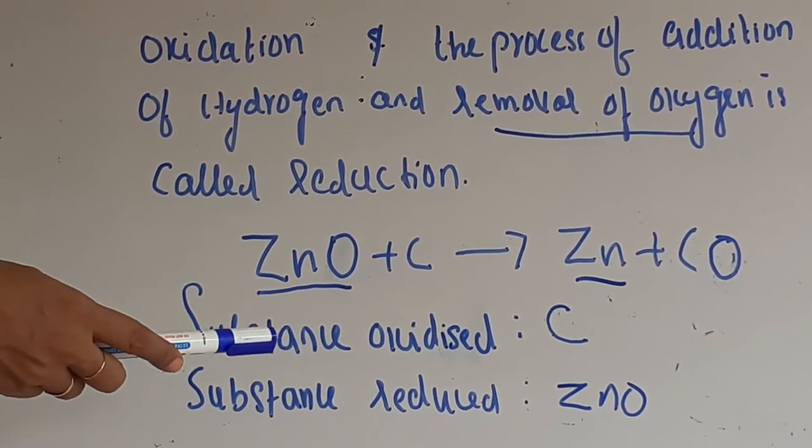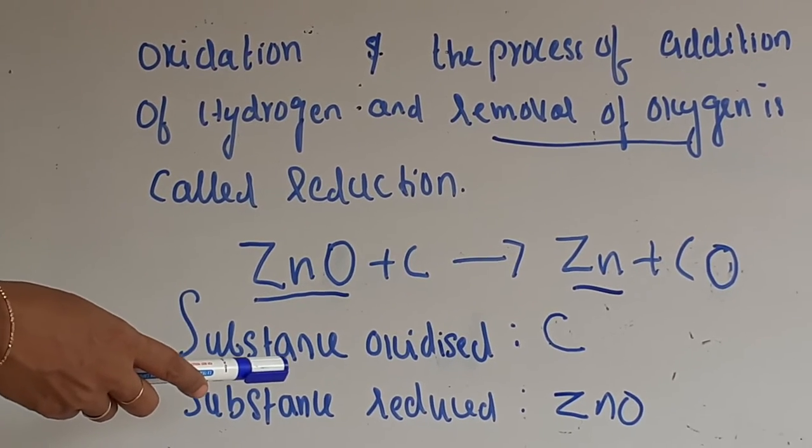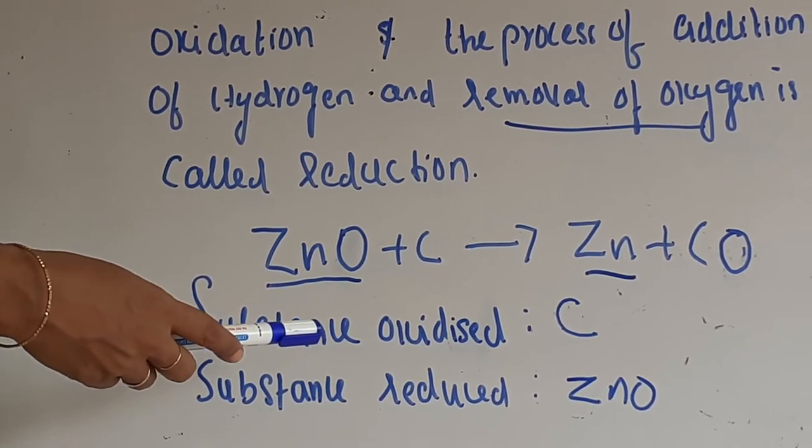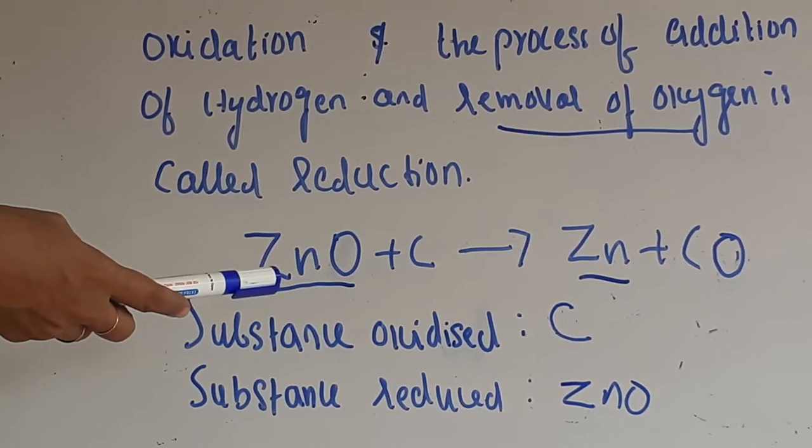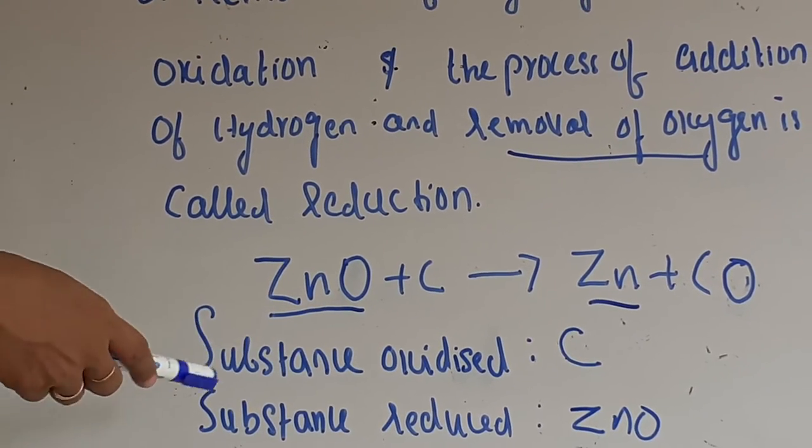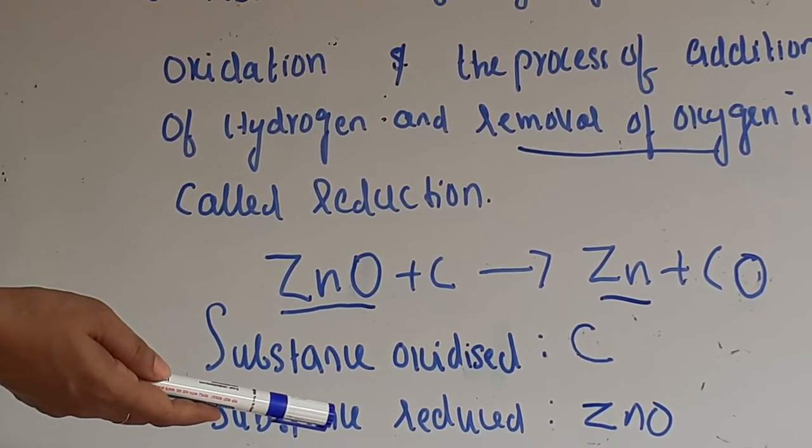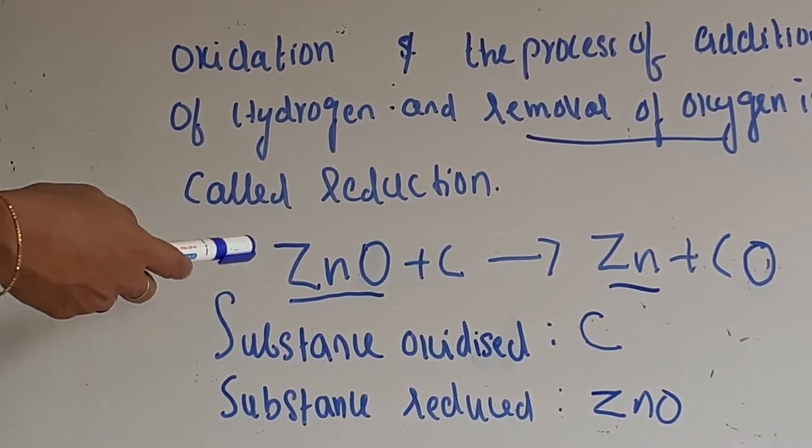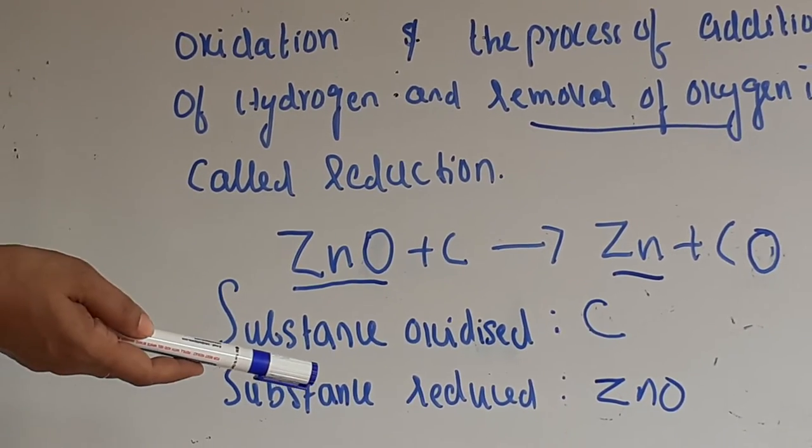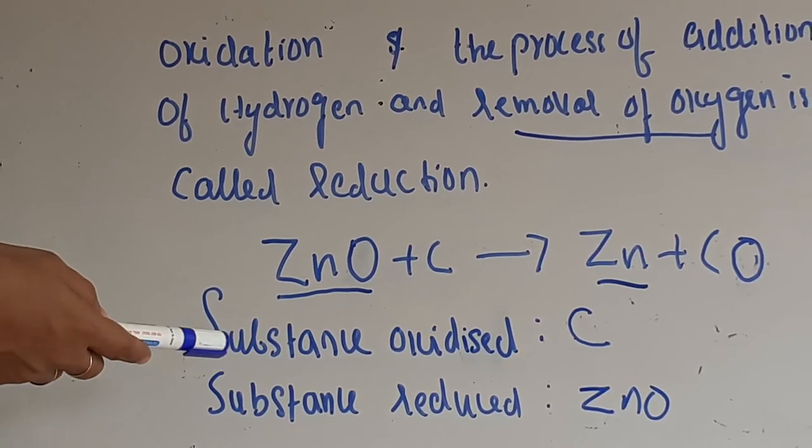Here two more terms I am going to teach you: oxidizing agent and reducing agent. When you call a book agent or newspaper agent, they distribute books or newspapers respectively. So an oxidizing agent is the agent that supplies oxygen or that removes hydrogen.